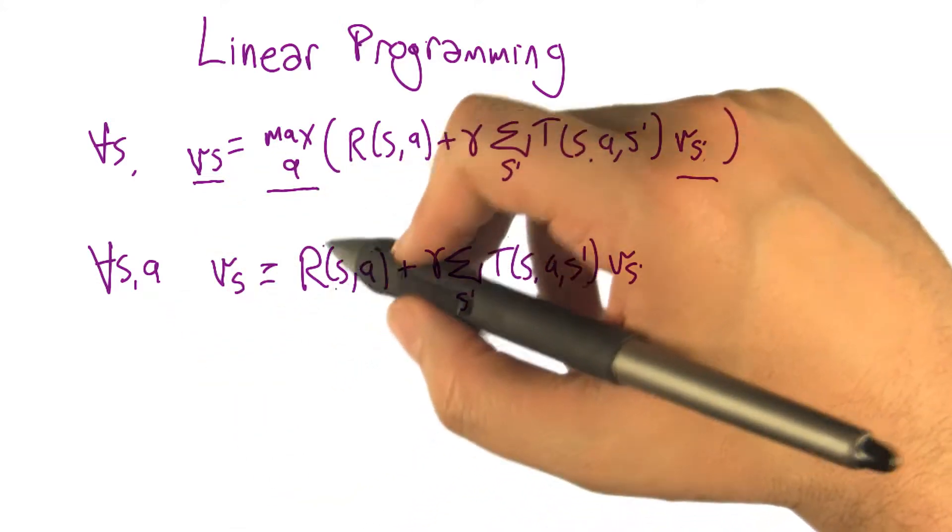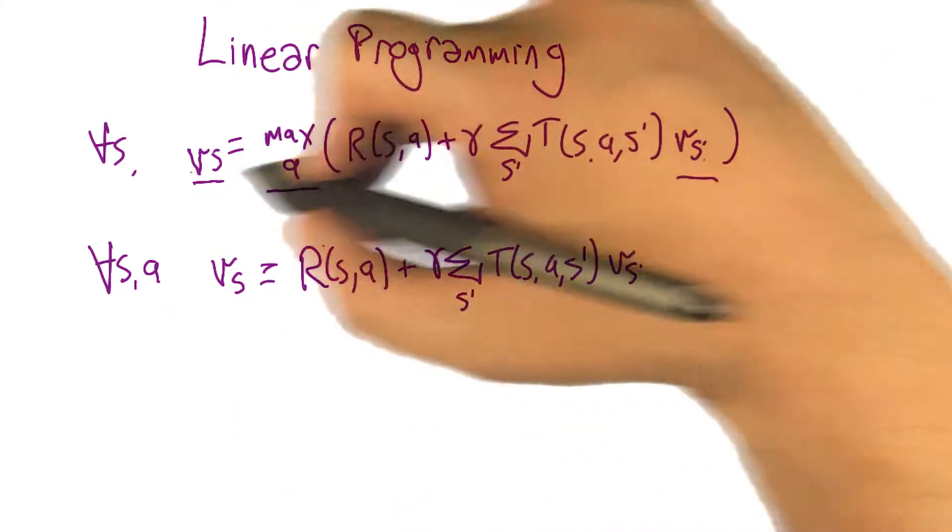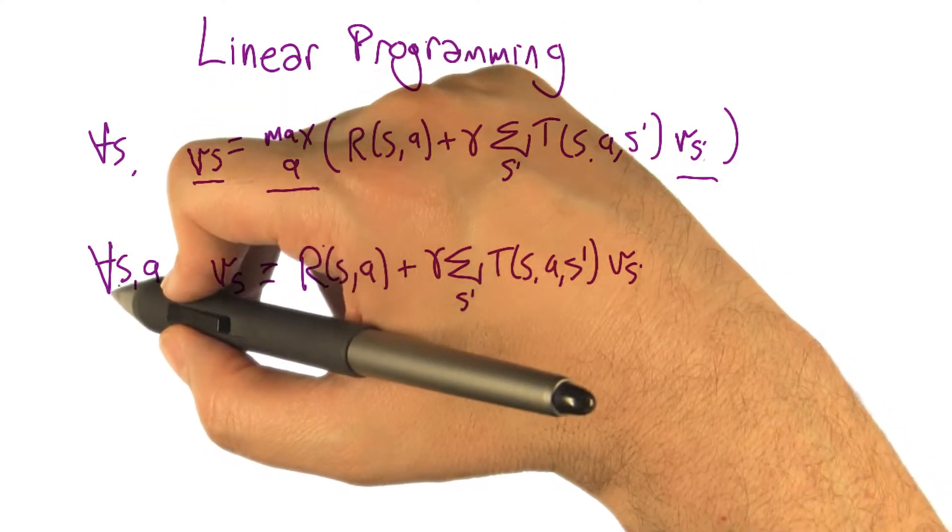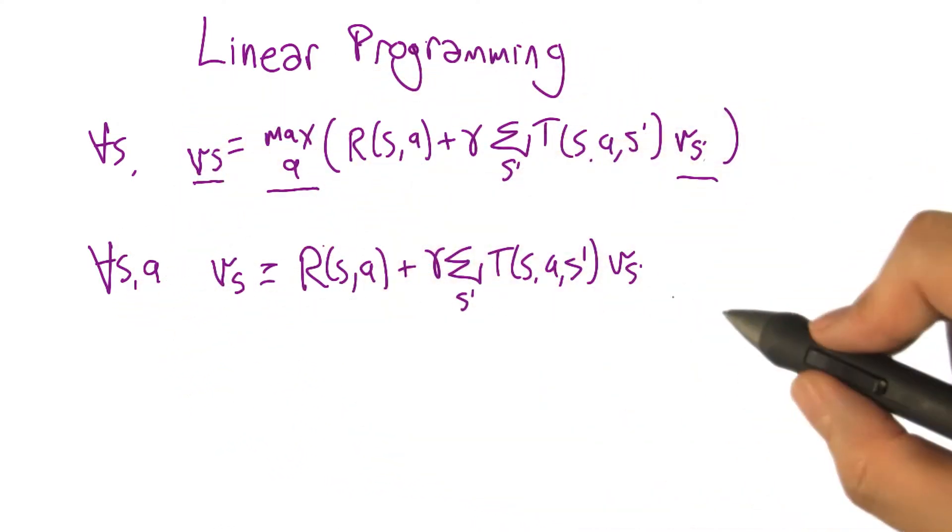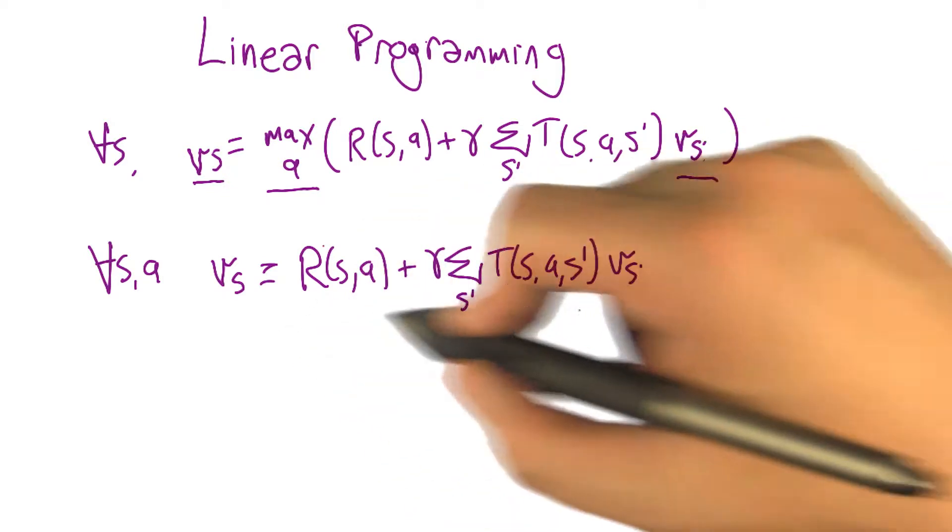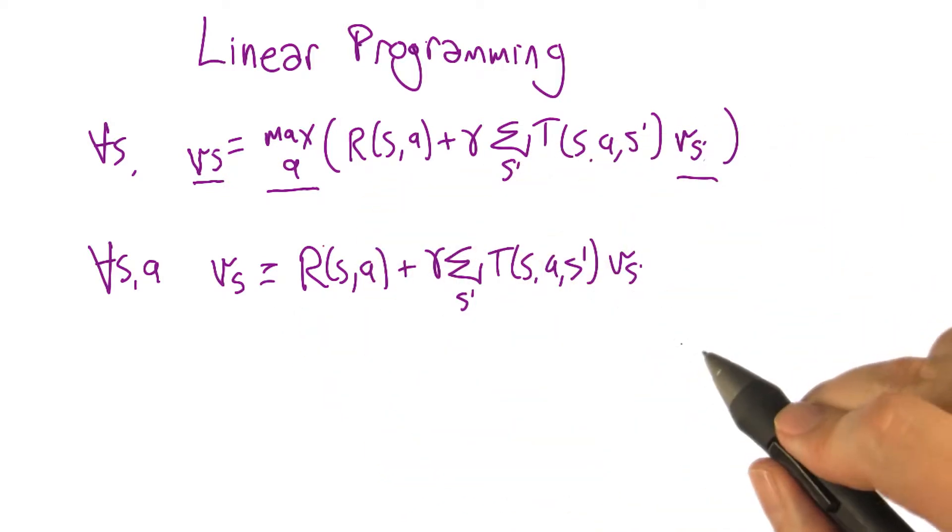So we can get part of the idea really simply by just replacing this equation with something that says for all state and action, the value of the state is bigger than or equal to this expression. This is essentially the Q value. For each S A, this is the Q value S A.